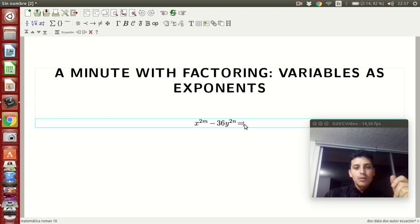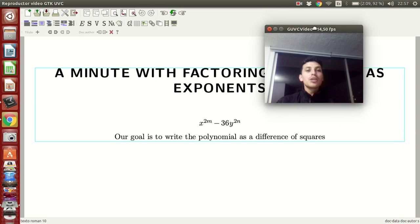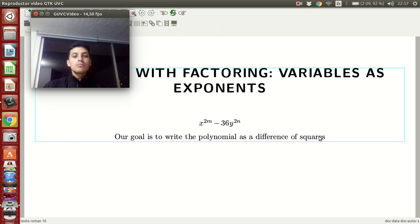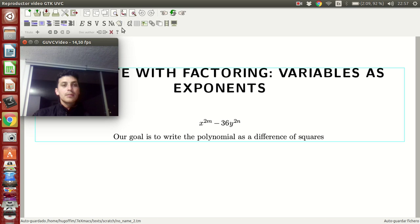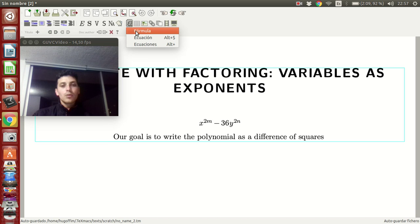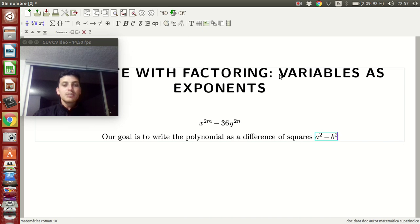So our goal is to write the polynomial as a difference of squares. Notice that I'm not showing you like, oh my god, the m. No, my goal is to write it as a difference of squares. Let me move myself. Okay, as a difference of squares, a square minus b square. This is my goal.